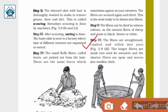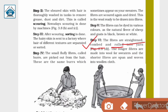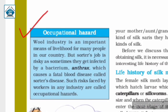Step 6, the last step: The fibers are straightened, combed, and rolled into yarn. The fibers which are longer are made into wool for sweaters, and the shorter fibers are spun and woven into woolen cloth.